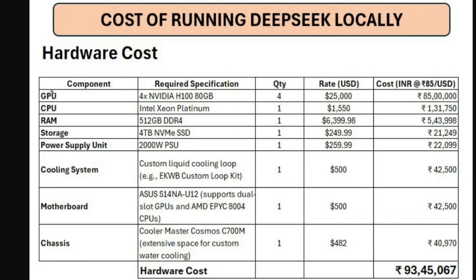For storage, you would require an SSD for fast inferencing — a minimum of 4TB — costing about $250, which is around ₹22,000 in INR. Power supply, meaning the electricity to run everything, would also be very high; the rate would be around $260 USD. These are all estimates and the values may be a little lower or higher depending on the region you live in.